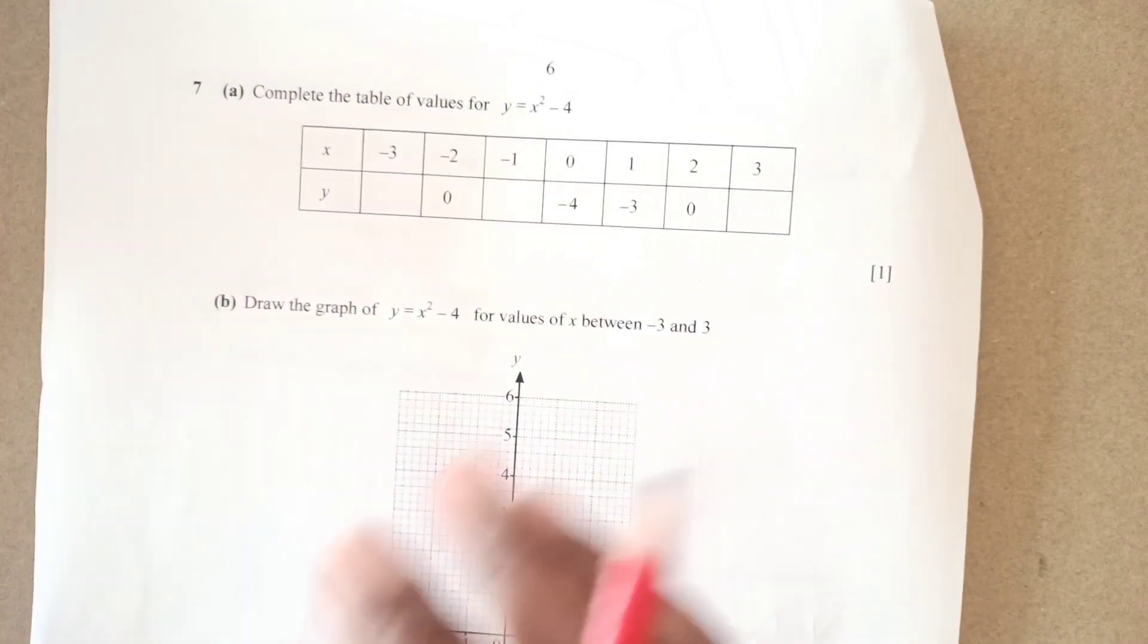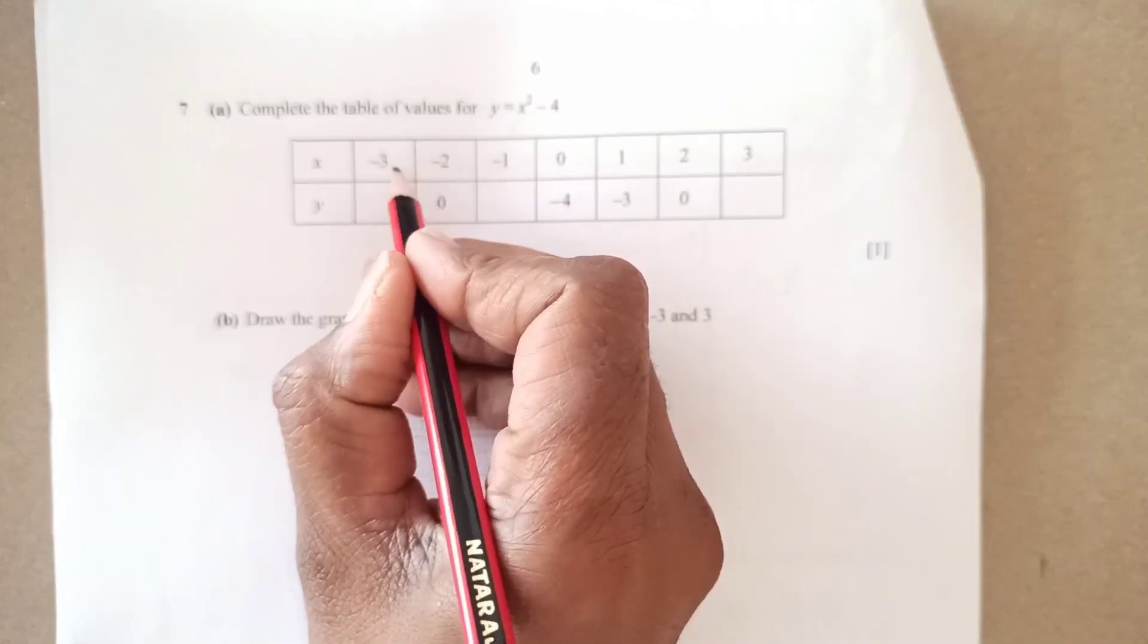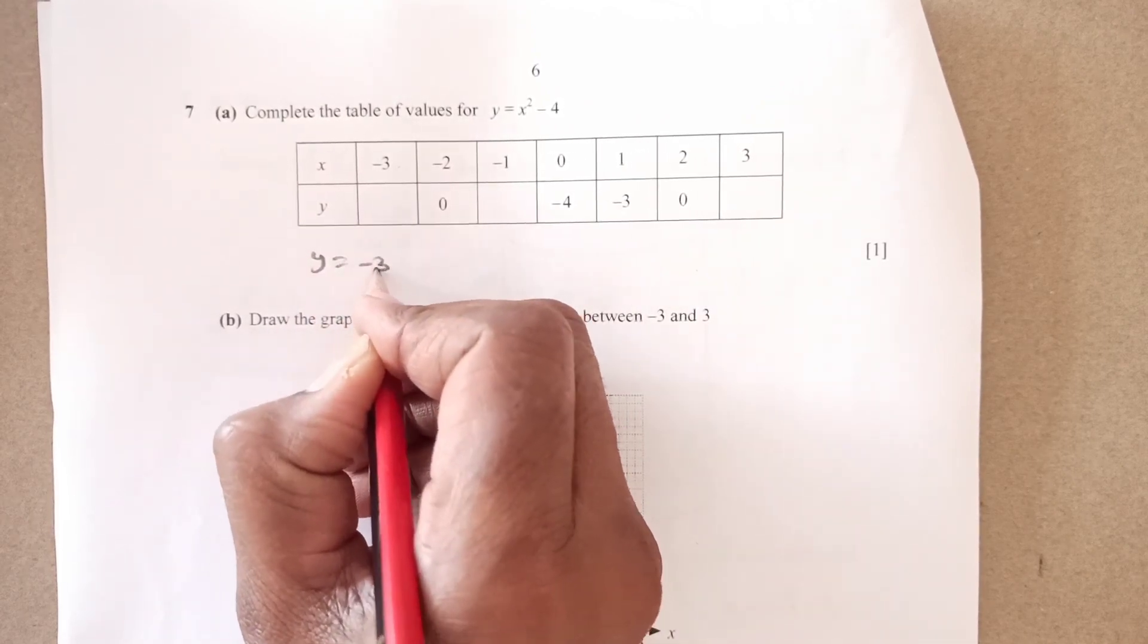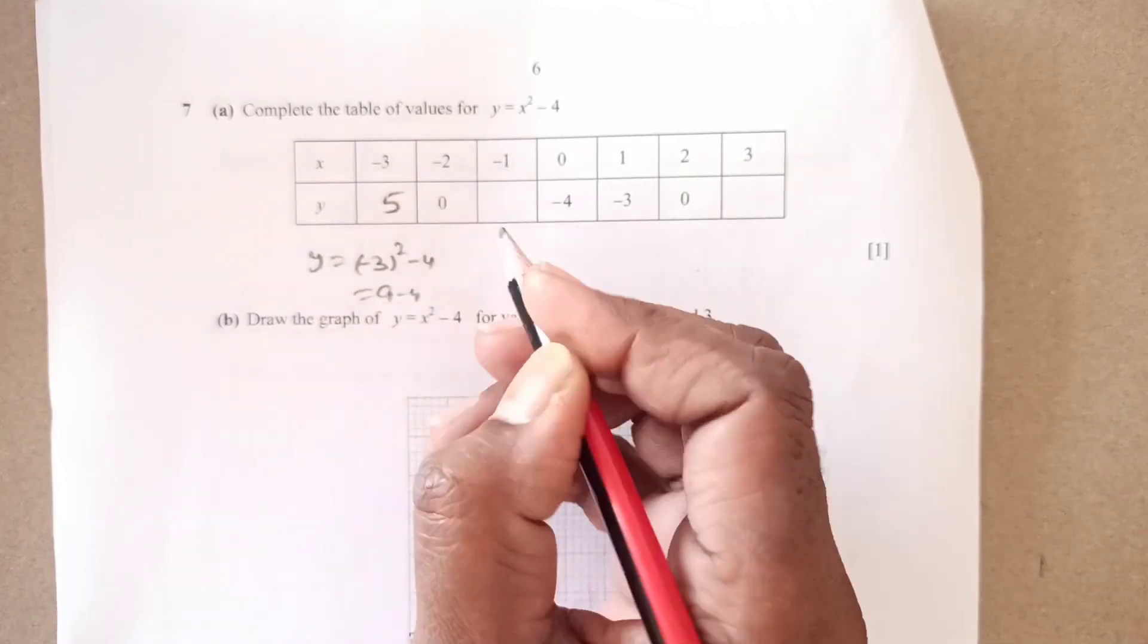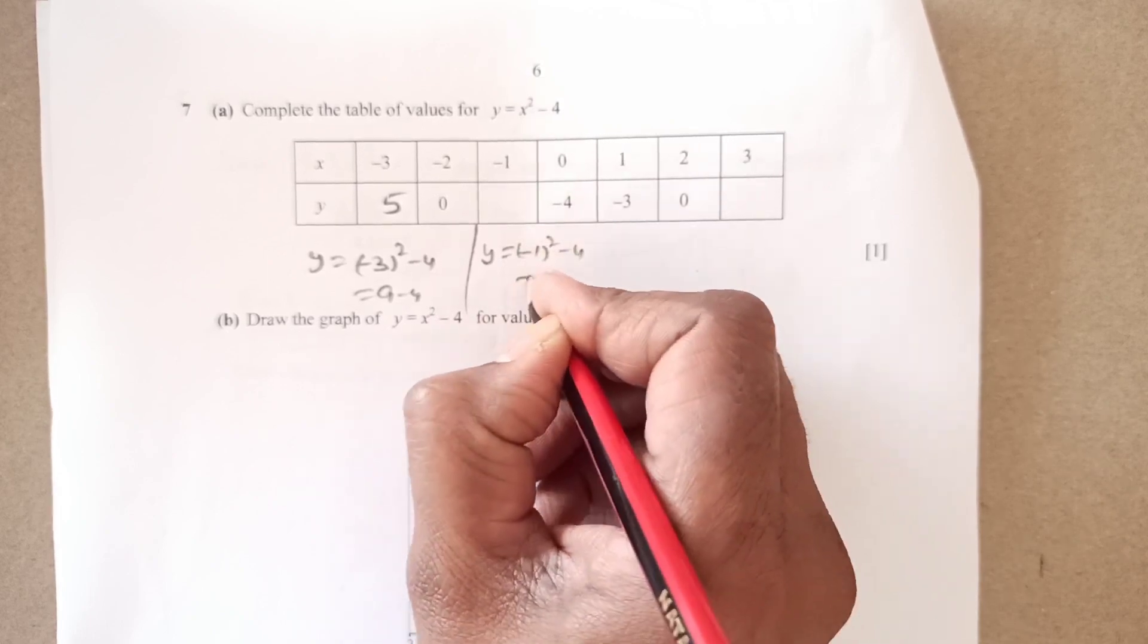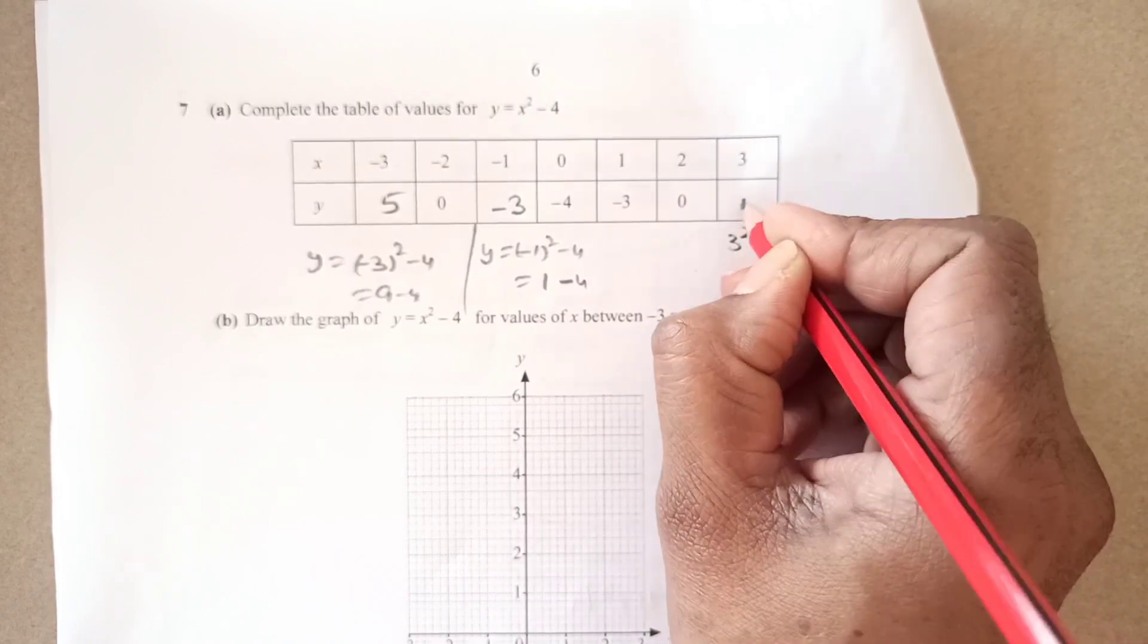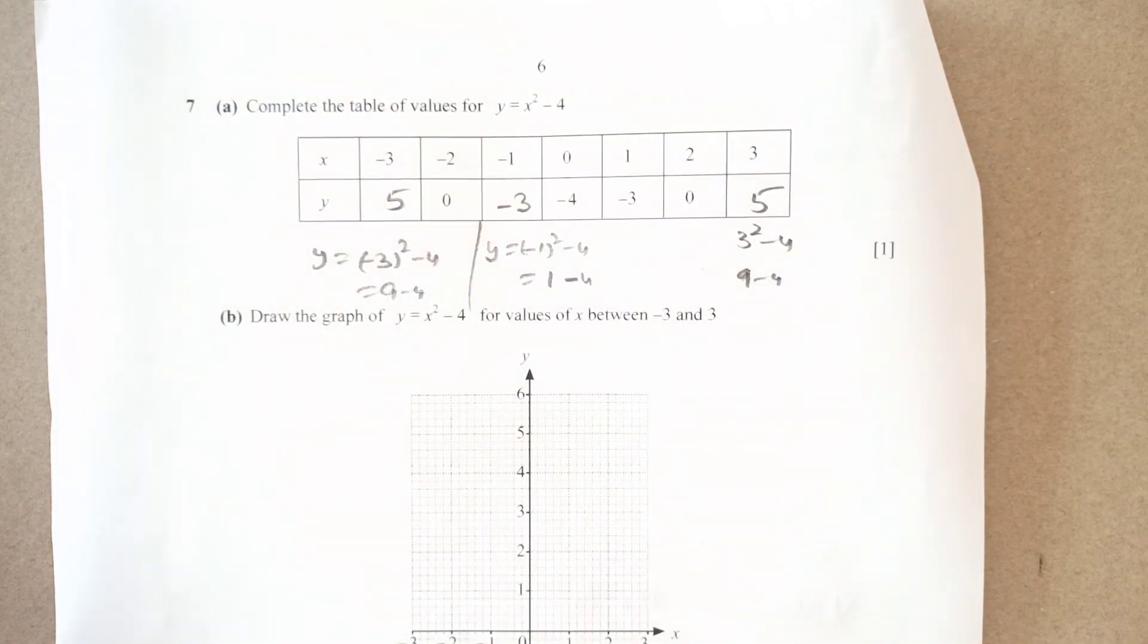Number 7 complete the table of values for y equals to x squared minus 4. We are given x value here. We are going to substitute the value of x here to get. This y equals to negative 3 squared minus 4. 3 squared is 9. 9 minus 4 it is 5 right. For 1 we have negative 1 squared minus 4. Negative 1 is 1 minus 4. This is negative 3 right. And then this one is 3 squared minus 4. 9 minus 4 it is 5. That is how you are going to complete this table.